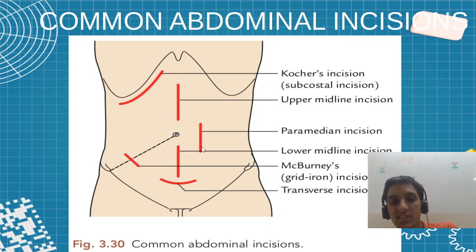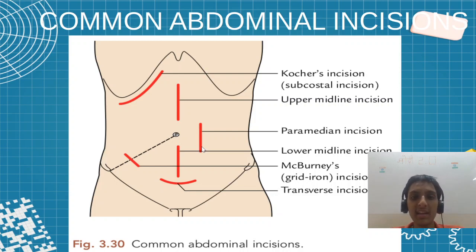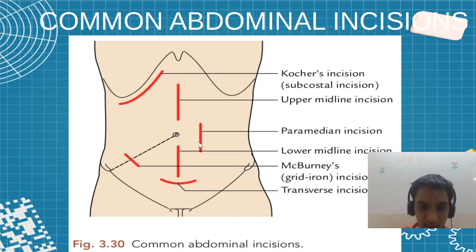What is that line which is there? Linea semilunaris. So in the linea semilunaris, we are finding the paramedian incision, and here you are finding the transverse incision.